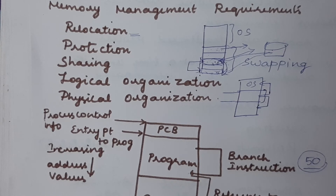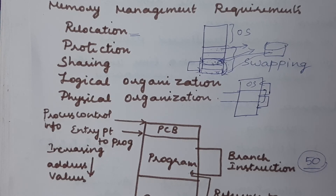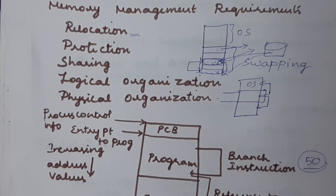Coming to physical organization, we have already seen the memory hierarchy. First we have main memory, and then secondary memory. Main memory provides fast access, while secondary memory provides slower but cheaper access. Main memory is volatile — it is a temporary storage medium and data is lost when power is switched off. Secondary memory is non-volatile and holds large capacity for long-term storage of programs and data, whereas main memory holds only the programs and data currently in use.